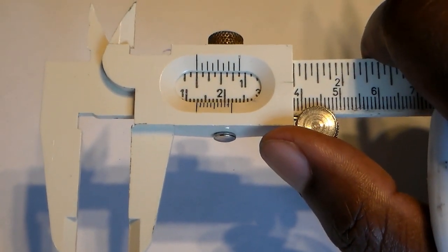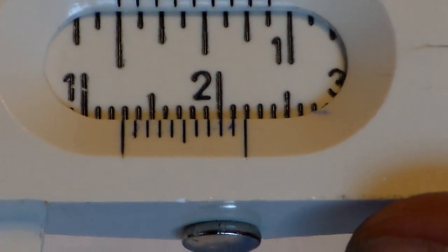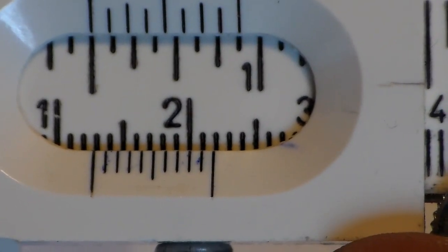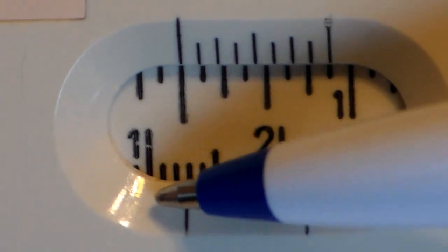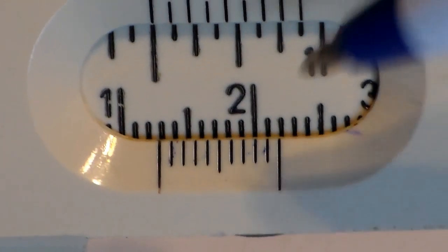And then we try to read the numbers and I'm going to zoom right in here. And so if we look at the calipers here now, we'll notice that the first mark here at the bottom happens to be past the one. So I know that it's going to be at least one centimeter.